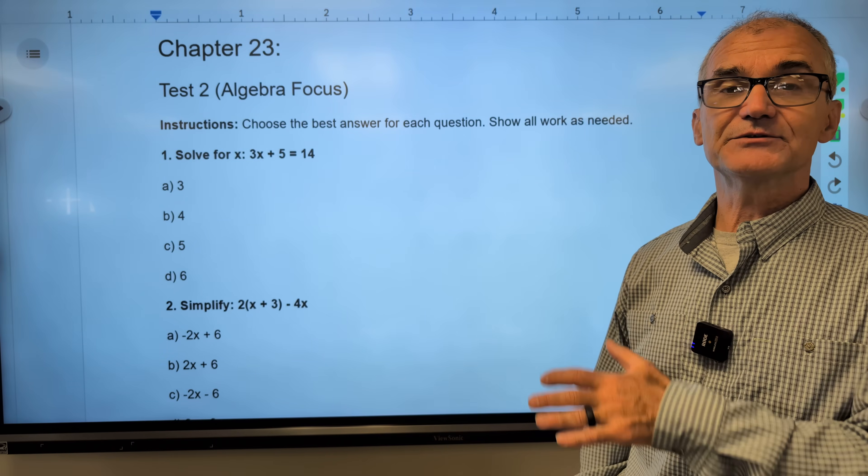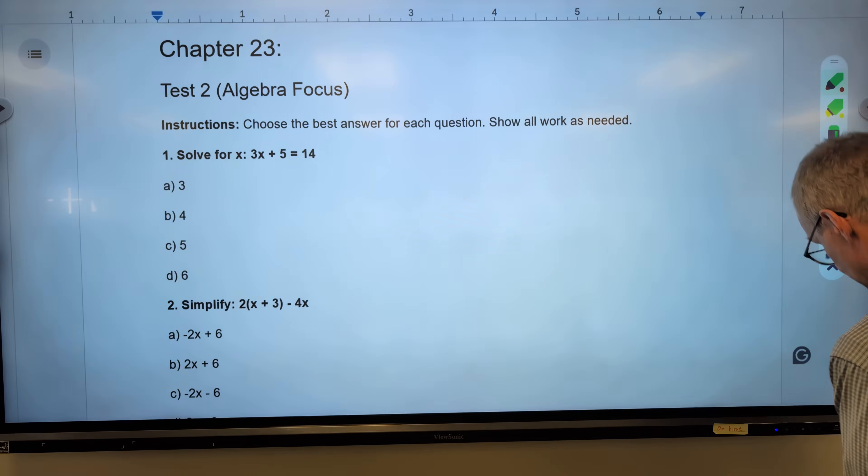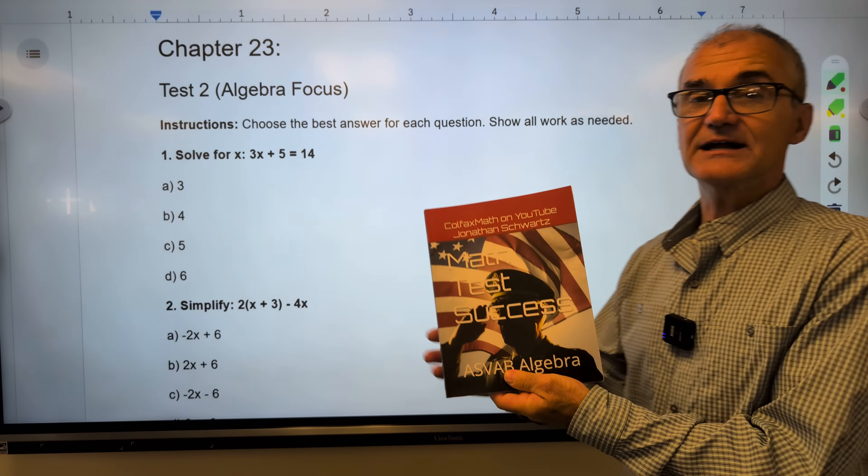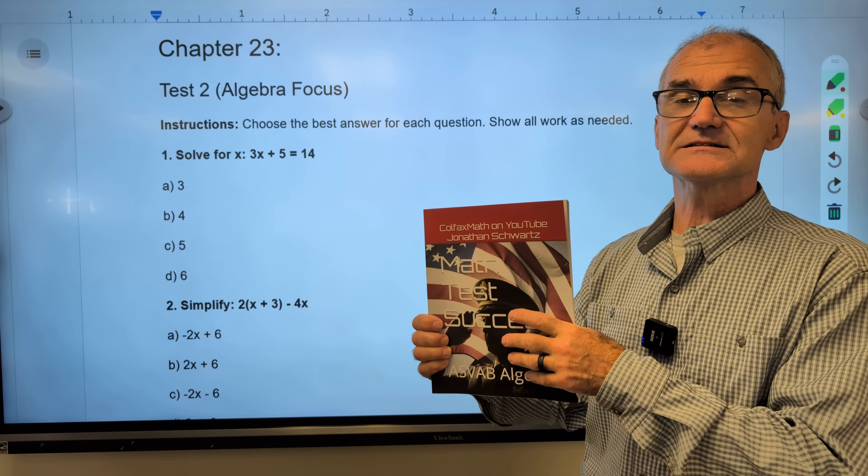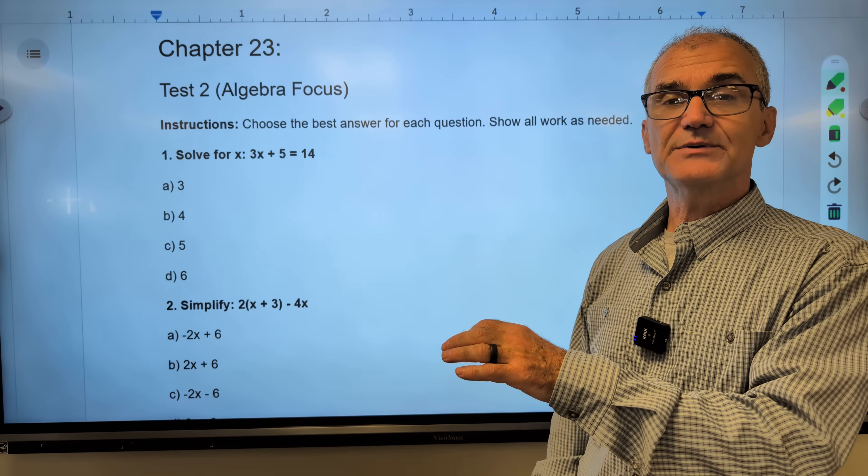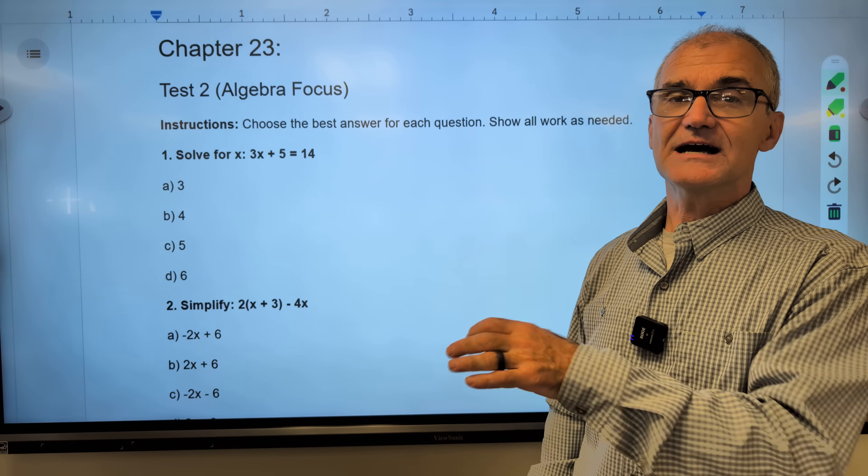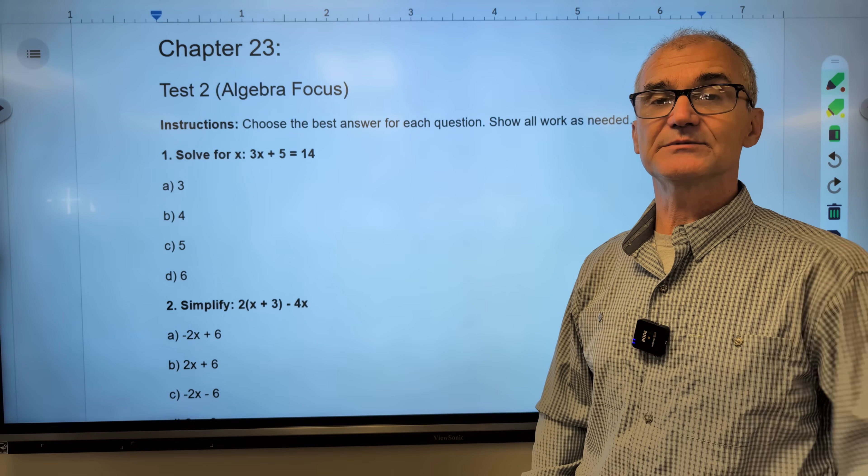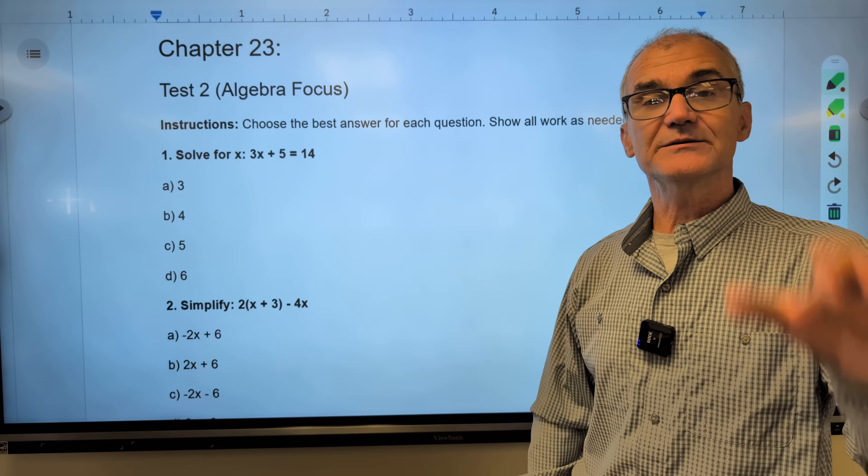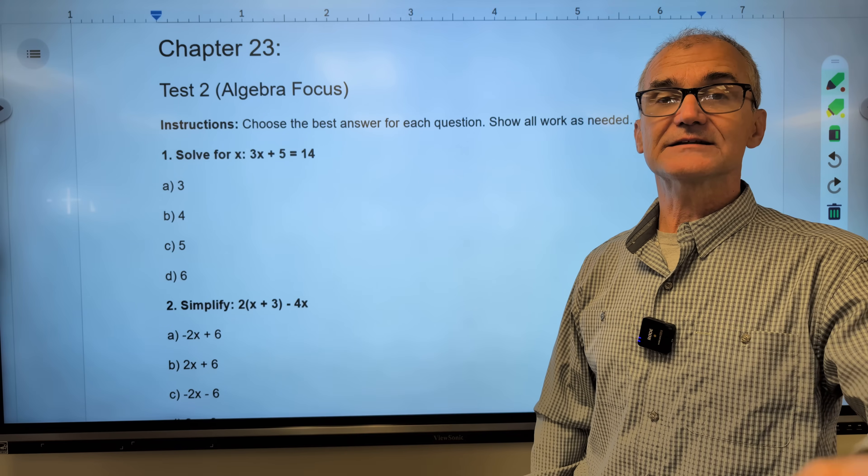This is all about doing well on both the arithmetic reasoning portion and the mathematical knowledge portion of the ASVAB exam. This is a 25 chapter book. You could buy it on Amazon for about 13 bucks or download it for free on the web page mathtestsuccess.com. I am very concerned that you are as successful as you possibly can be and the way you're going to be successful is through practice and work.